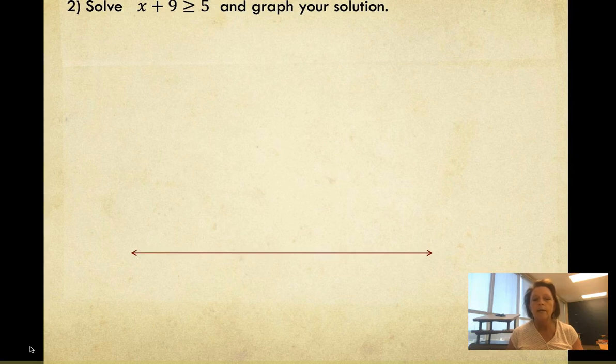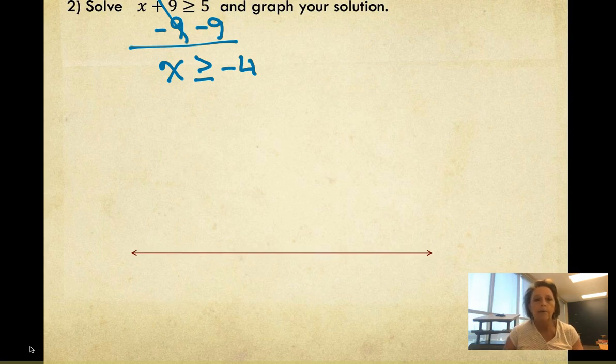Now on this one it says x plus 9 is greater than or equal to 5. Again, we're going to treat it like it's an equation. To get rid of the 9, we're going to subtract 9 from both sides and we get x is greater than or equal to negative 4. Again, we didn't multiply or divide, so we don't have to worry about flipping our sign.